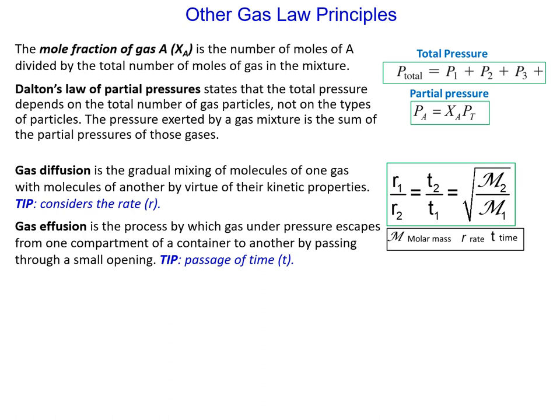Gas effusion is the process by which gases under pressure escape from one compartment to another by passing through a small opening. In general, when we talk about diffusion, we typically think about the rate. When we talk about effusion, we typically talk about the time. Note that in the equations, when setting up the equation, the rate R is diagonal to its matched molar mass. Time T is matched directly across from its molar mass.